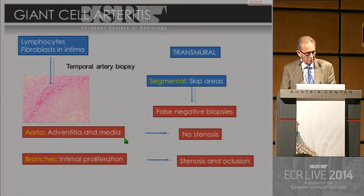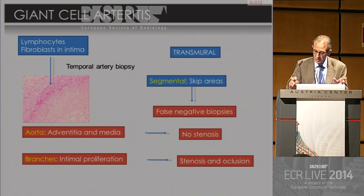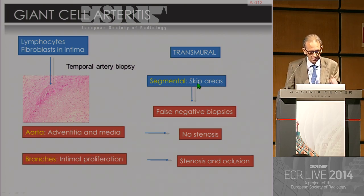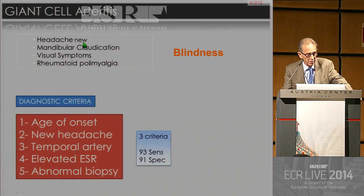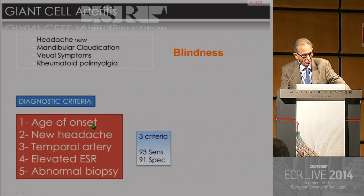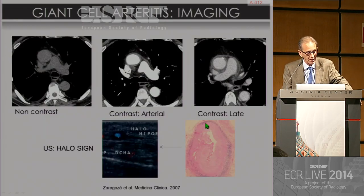In the aorta, the adventitia and the media are involved. In the branches of the aorta, there is usually intimal proliferation, which is why there is a tendency to occlusion and stenosis of the main branches of the aorta. Note that it is segmental and may have skip areas, meaning that a biopsy may be falsely negative if it doesn't hit the diseased area. There are several classical symptoms of giant cell arteritis, especially in the head: mandibular claudication, headache, and finally blindness. With three of five criteria, there is high sensitivity and specificity for diagnosis.